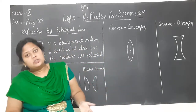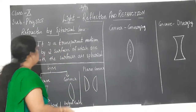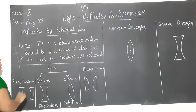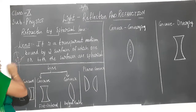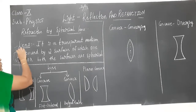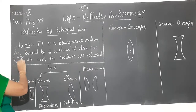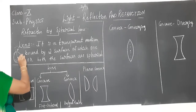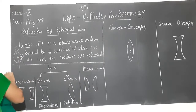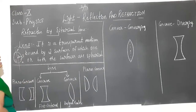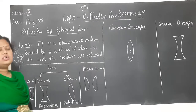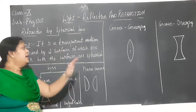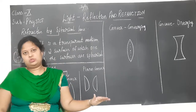As with spherical mirrors — if you consider a whole sphere and cut it in half, you get the center of curvature. The distance PC is the radius of curvature, R. All that you have already learned. The same concepts apply to lenses as well.